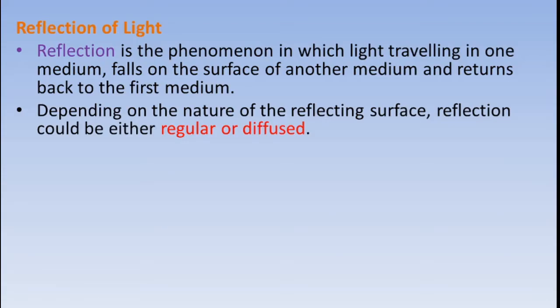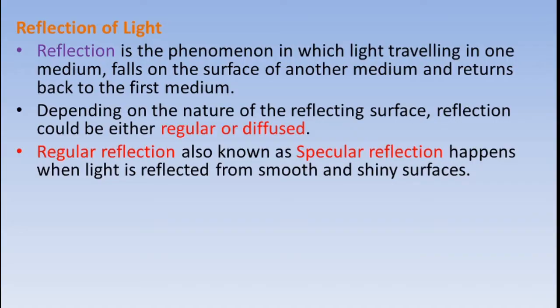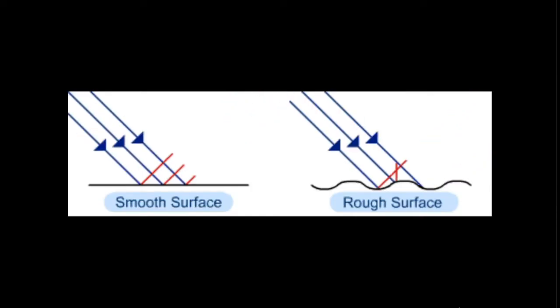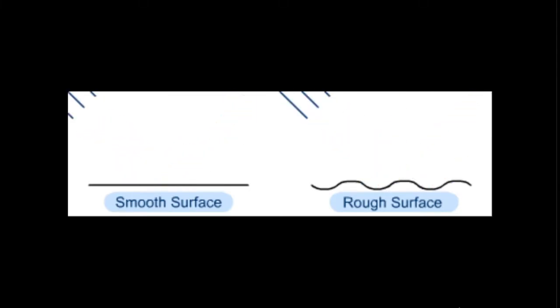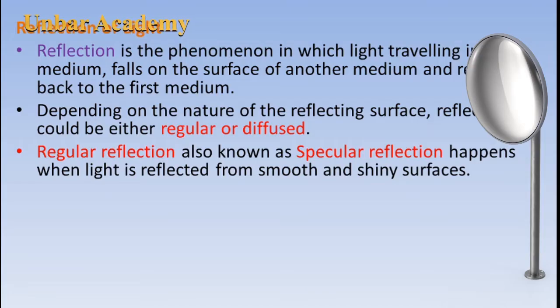Regular reflection, also known as specular reflection, happens when light is reflected from a smooth and shiny surface. Diffused reflection happens when light is reflected from a rough surface. Reflection from a mirror forms regular reflection, and reflection from a wall, wood, or paper forms diffused reflection.